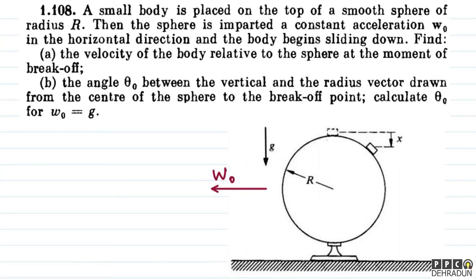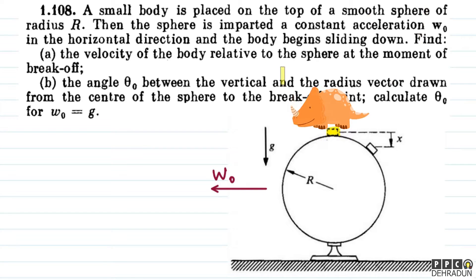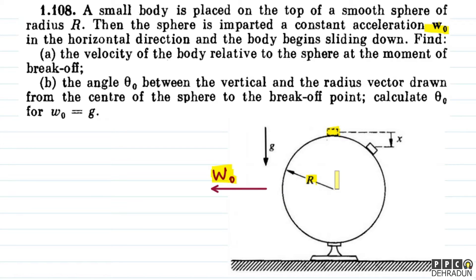So let's look at the question. A body is placed on the top of a smooth sphere of radius R. The sphere is imparted a constant acceleration w0 in the horizontal direction — here it is pointed to the left side. So this is the body; it has started to slip down with respect to the sphere.